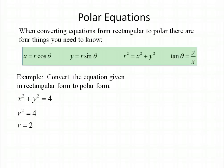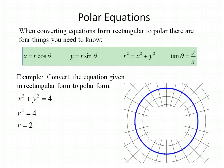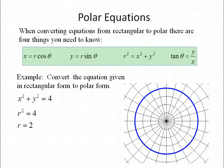You should recognize x squared plus y squared equals 4 as a circle centered at the origin with a radius length of 2. In polar form, it just means you want all the points that are two units away from the pole, giving you a circle centered at the pole with a radius length of 2 — the same drawing as the rectangular form, just done on a polar graph in terms of angles and radius lengths.